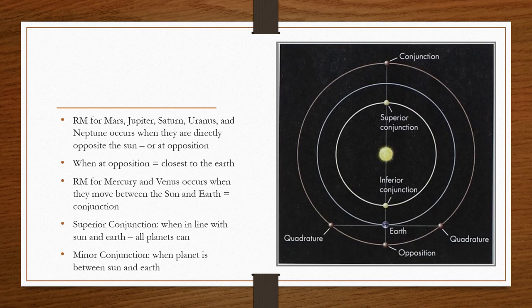Retrograde motion for Mars, Jupiter, Saturn, Uranus, and Neptune, where they directly oppose the sun in the sky, is known as opposition. In this case, opposition is when planet lines up with the Earth and the sun. When at opposition, it is closest to the Earth, meaning it aligns all in one. Planetary alignment, huge thing in sorcery and making divinations.